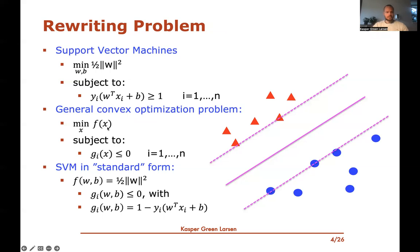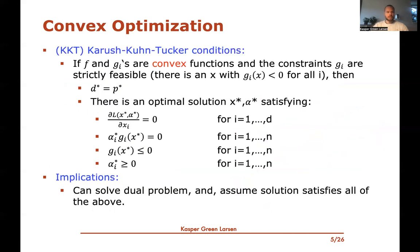Let's put the SVM in standard form. We need to define our f and g_i's. The f is straightforward: let f(w, b) = half squared norm of w. For the g_i's, the constraints are written as greater-than-or-equal-to-one constraints, so we turn them into less-than-or-equal-to-zero constraints. We take the left-hand side and subtract it from both sides, giving us g_i(w, b) = 1 − y_i(w^T x_i + b). This is the same optimization problem rewritten into the standard form for general convex optimization.